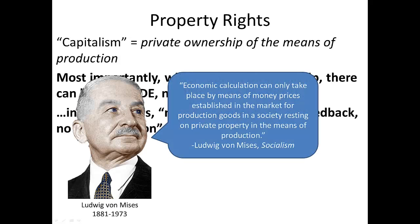This was pointed out most famously by the great economist Ludwig von Mises, an Austrian economist who was a student of Carl Menger and later taught at New York University. He escaped Europe in 1940, chased out by the Nazis. Von Mises criticized socialism — the absence of private property — early in the 1900s. He said economic calculation, which we call profit and loss accounting, can only take place by means of money prices established in the market for production goods in a society resting on private property in the means of production.